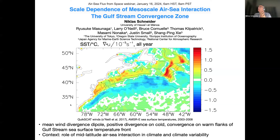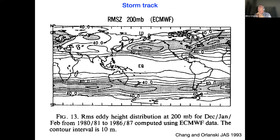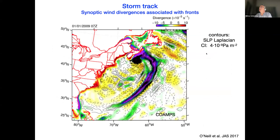This is a picture showing the RMS value of 200 millibar heights from ECMWF. We are in the upper right corner in the North Atlantic — you can see this is the area of the storm track, shown here for the winter months only. So we not only have the features of the sea surface temperatures, but we have a time-varying, rapidly varying winds associated with the Gulf Stream that themselves are associated with very large values of surface wind divergence and convergence.